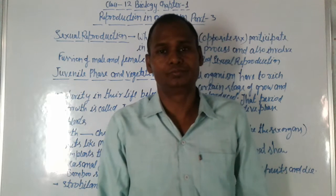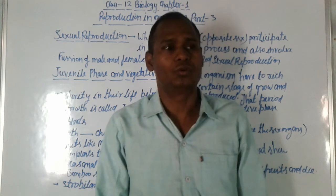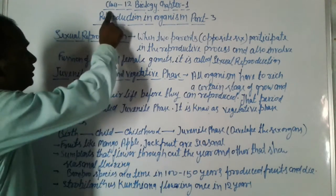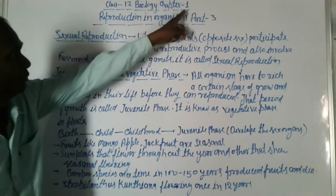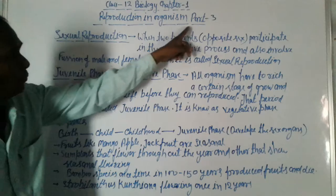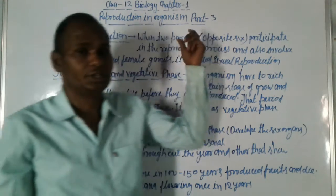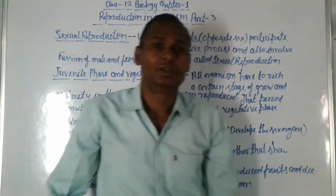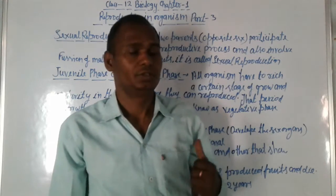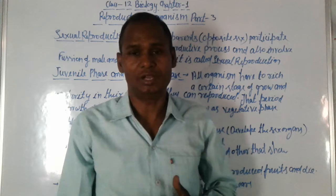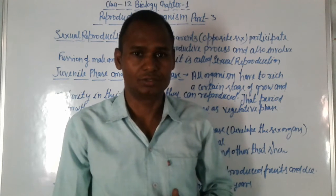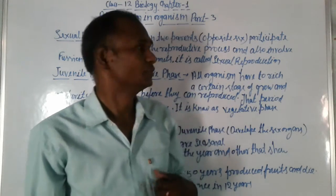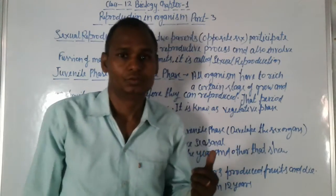Hello everyone, how are you today? I am going to talk about this chapter in biology, chapter 1: Reproduction in Organisms, Part 3. This is the third part of this chapter. We discuss about reproduction and its types, such as asexual reproduction. In this video, I will study about sexual reproduction.